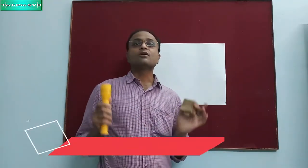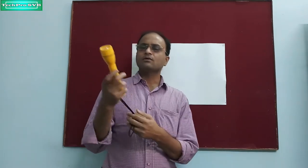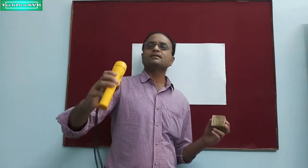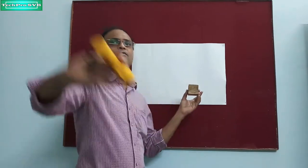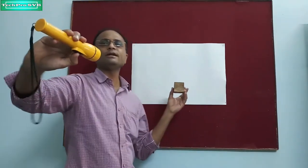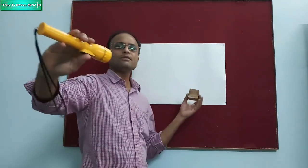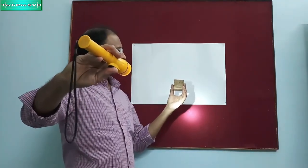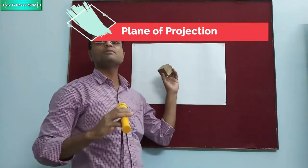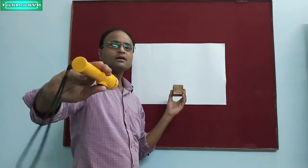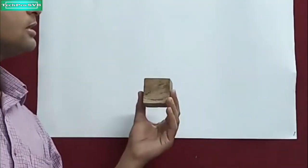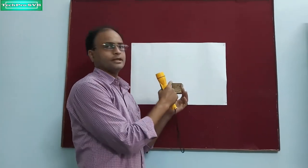Let us first understand the concept of projection. I have got two objects with me — this is a torch and this is a solid object in the form of a rectangular block. Now let us say this torch is focusing onto this object from an infinite distance. So when the torch is lit onto this object, we can see the shadow of the object on the screen — this is the plane of projection. The shadow comprises the outline of this object.